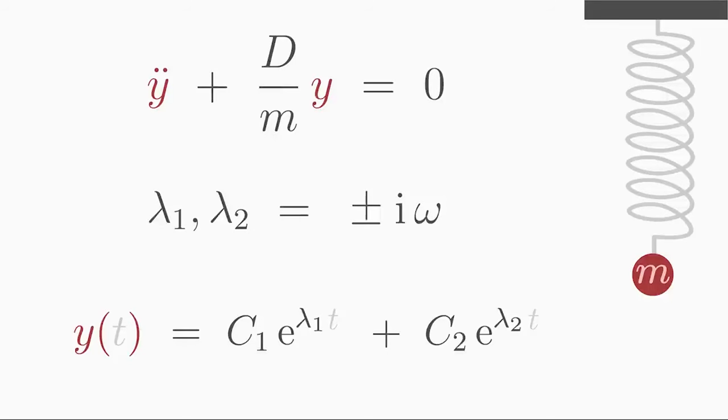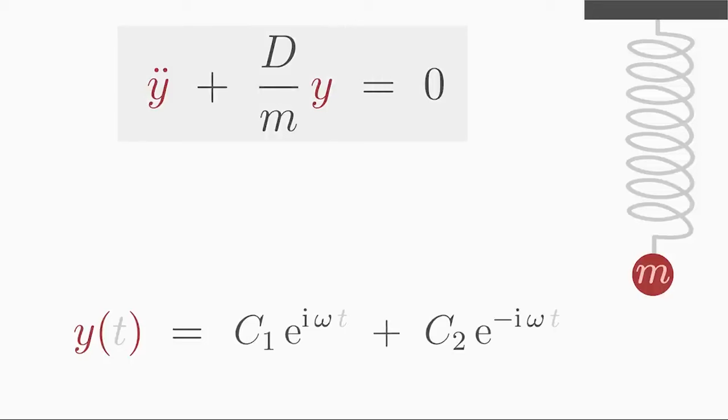If we insert the lambda values we have just found into the exponential ansatz, we get the general solution for the considered differential equation. This solution seems very abstract, but I will show you that this solution corresponds to an oscillation.